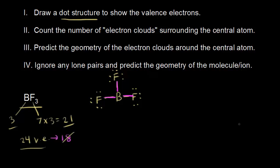Some of you might think boron is not following the octet rule here, and that is true. But it's okay for boron not to follow the octet rule. To think about why, let's assign a formal charge to our boron atom. Each covalent bond consists of two electrons. You take the number of valence electrons in the free atom, which is three, and subtract the number of electrons in the bonded atom. One electron from each bond goes to fluorine and one goes to boron, so boron is surrounded by three valence electrons. Three minus three gives us a formal charge of zero. The goal is to minimize formal charge when drawing dot structures, and so this is a completely acceptable dot structure, even though boron isn't following an octet.